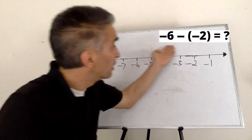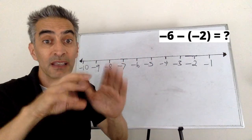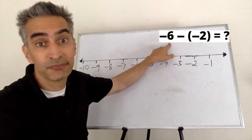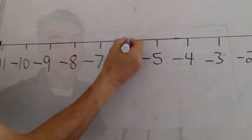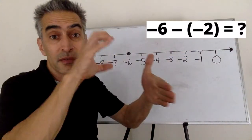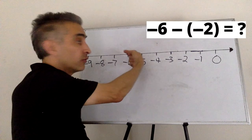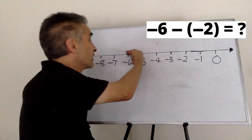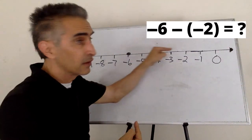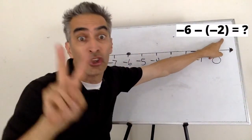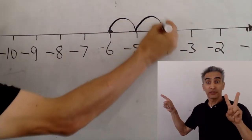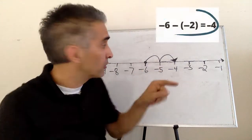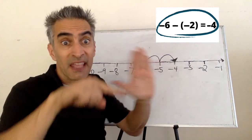Another example: What does negative 6 minus negative 2 equal? We're going to start with negative 6. This subtraction sign means move to the left, but this negative sign means go in the opposite direction — so now we go to the right 2 spaces: 1, 2. Negative 6 minus negative 2 equals negative 4.